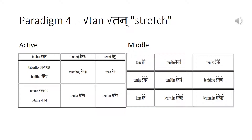Let us take the root 'tan' (stretch) as an example of a conjugation of a root with medial 'a'. This shows the fusion of the root and the reduplication resulting in a medial 'a' in the weak forms. The strong stem is 'tatān' and the weak stem is 'ten'.